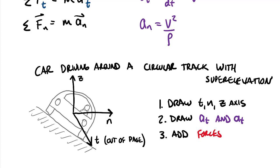One thing to note: tangent and normal do not have to form a right-hand coordinate system. T crossed into N may give a negative z, and that is acceptable. In tangent-normal problems involving cross products, we typically convert to XY components, ensuring XY is a right-hand system where X cross Y equals Z, so signs work out correctly. For the kinetic diagram, normal acceleration a_n points toward the center of curvature, and tangential acceleration a_t points in the direction of car motion, out of the page.